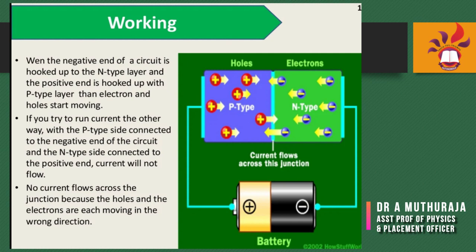The holes exist at a lower energy level than the free electrons. The positive symbol represents holes and the negative symbol represents electrons. Therefore, when a free electron falls, it loses energy. This process is what happens in the LED — you can identify it clearly from the structure diagram.